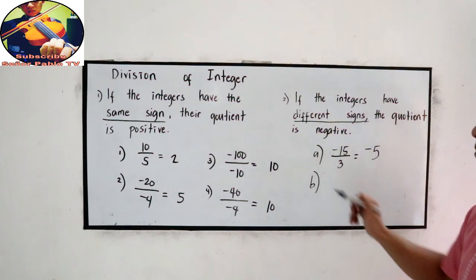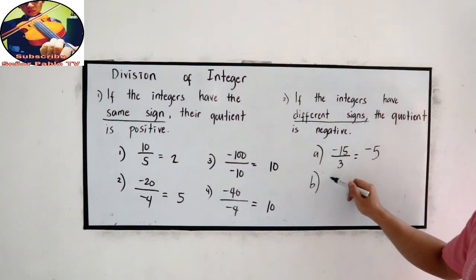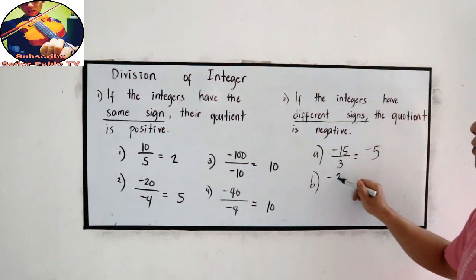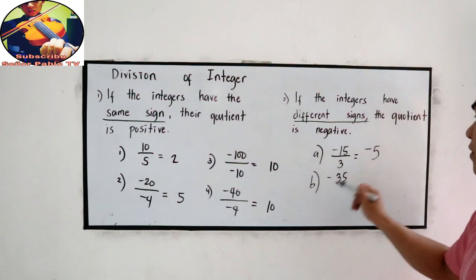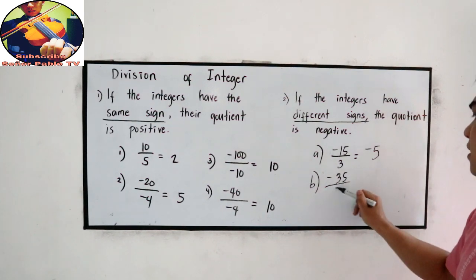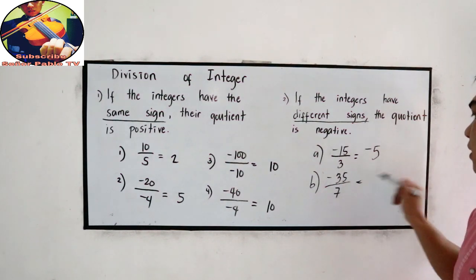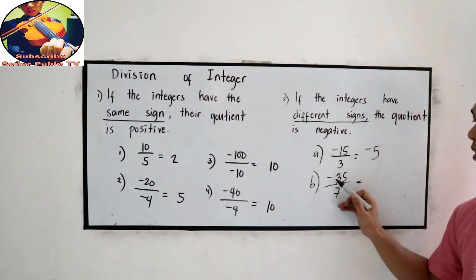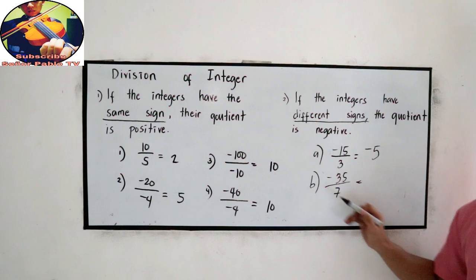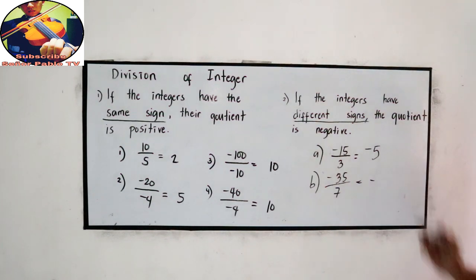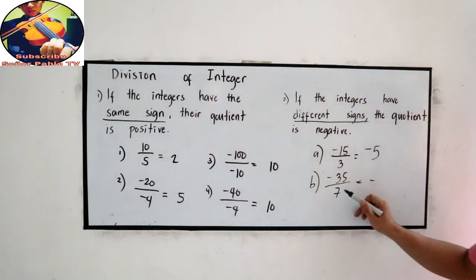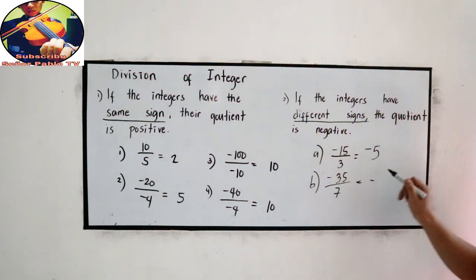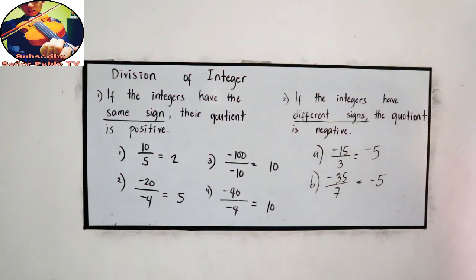B: negative 35 divided by 7. Negative and positive, so that is negative — 35 divided by 7 is negative 5.